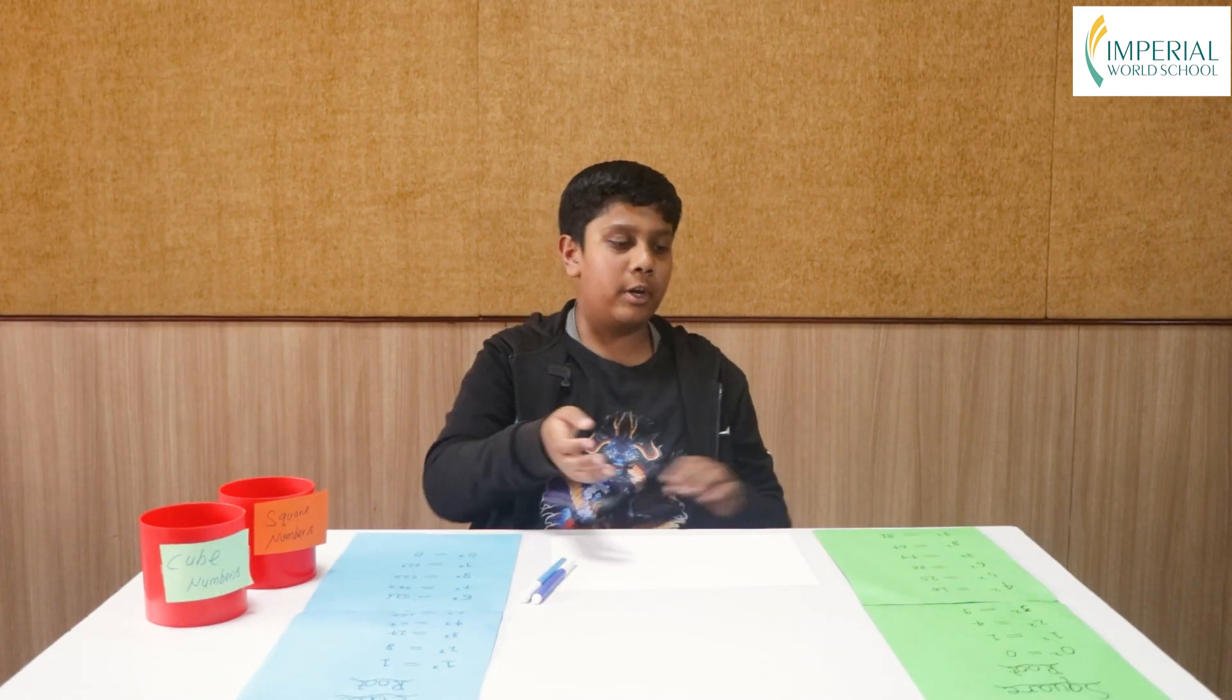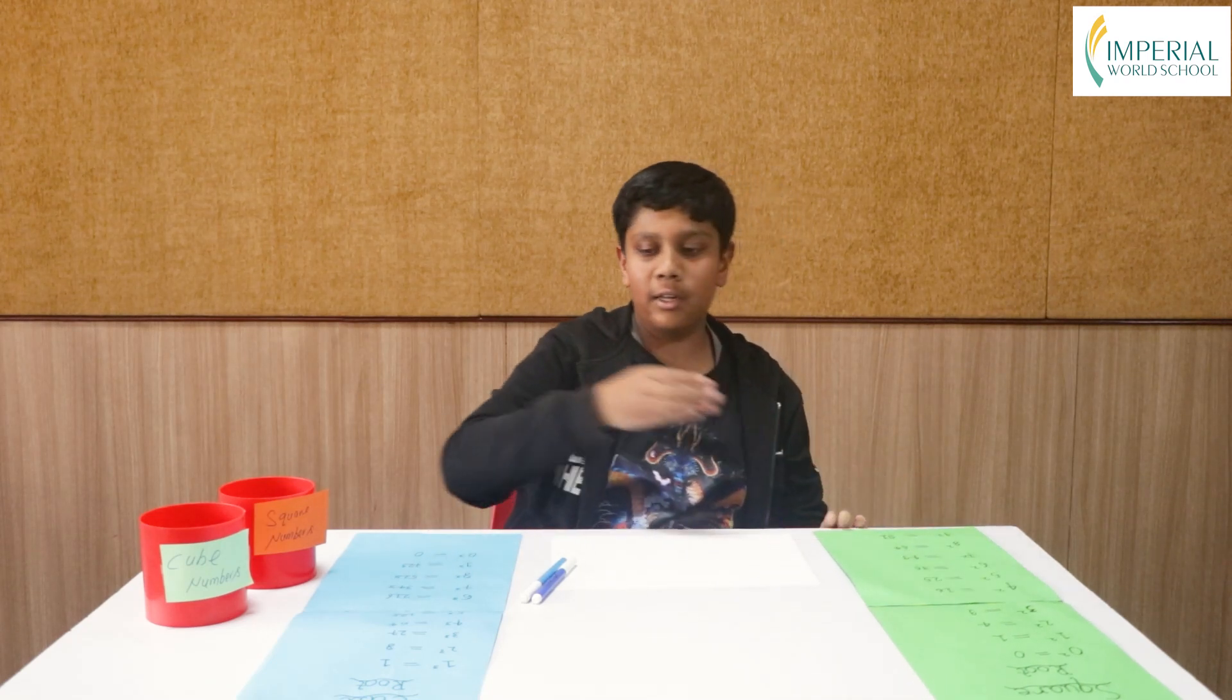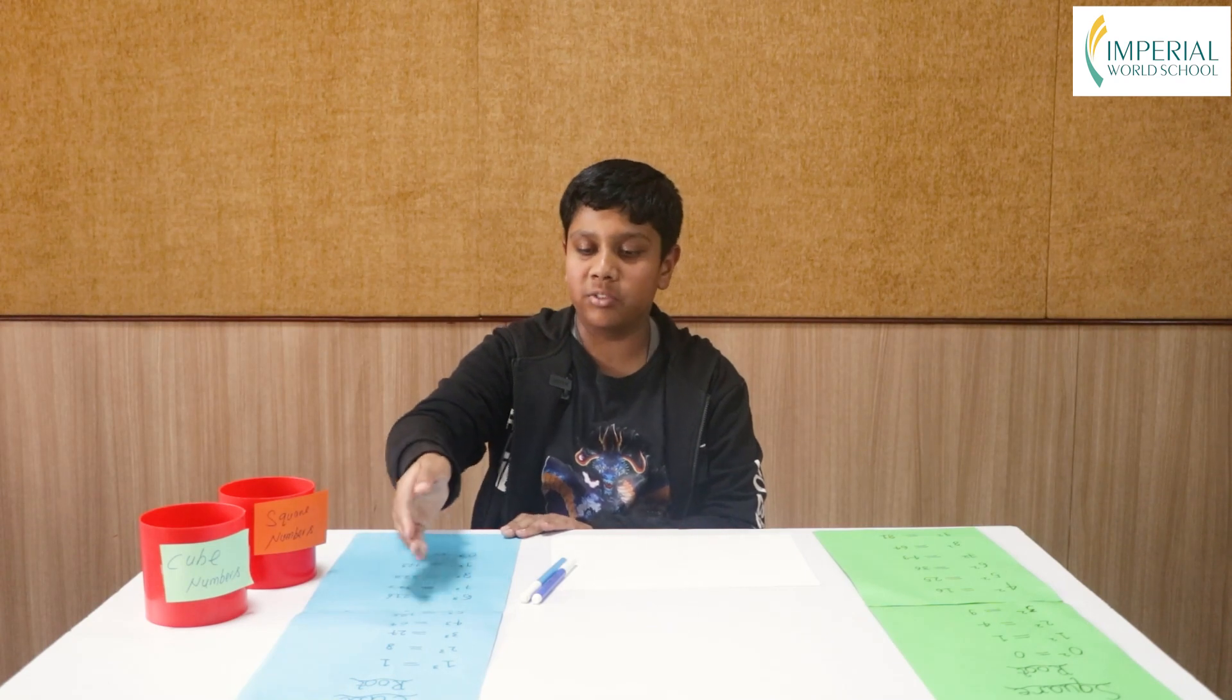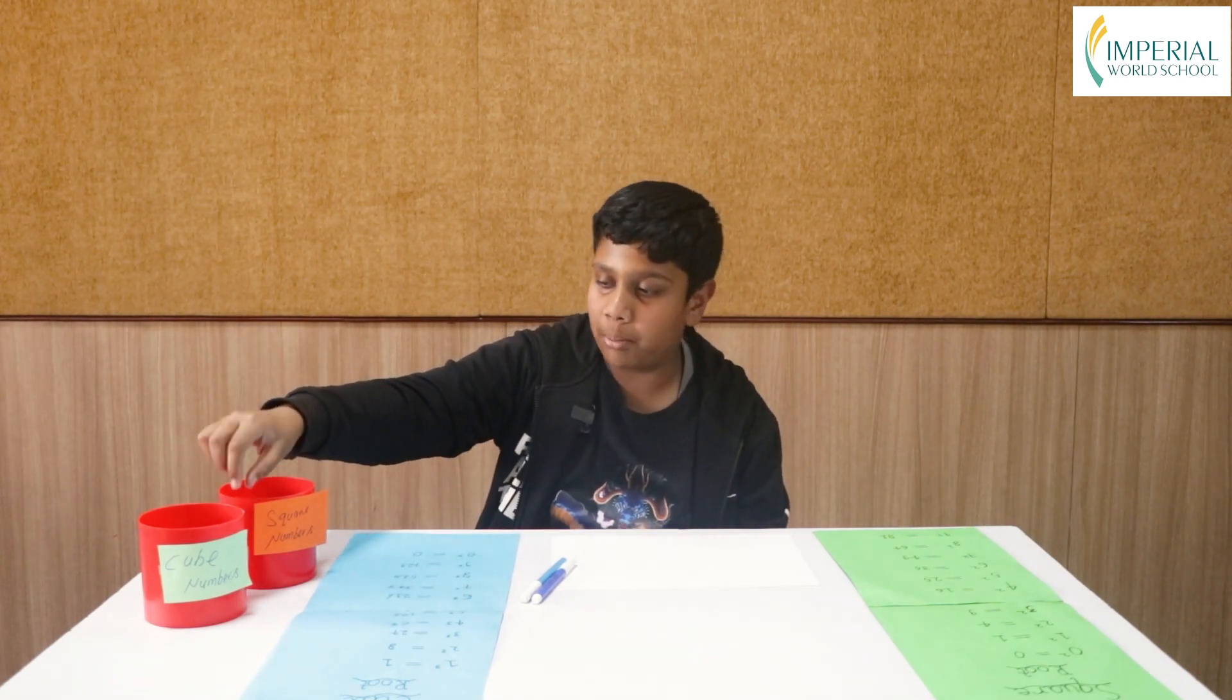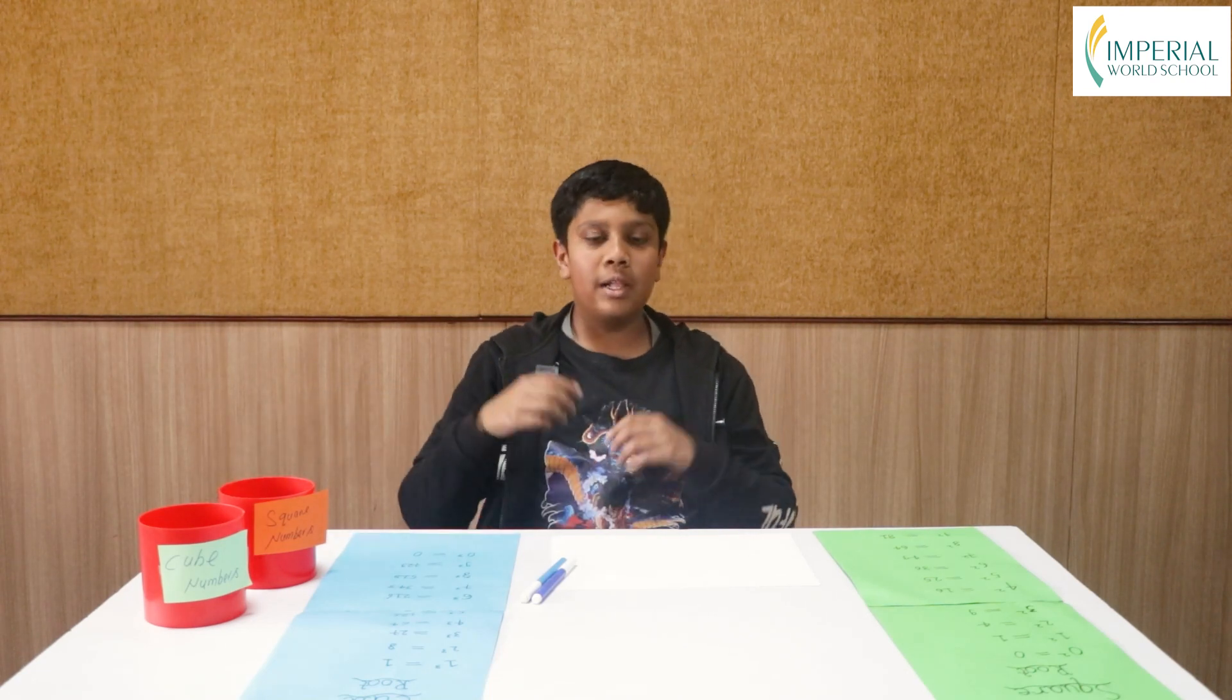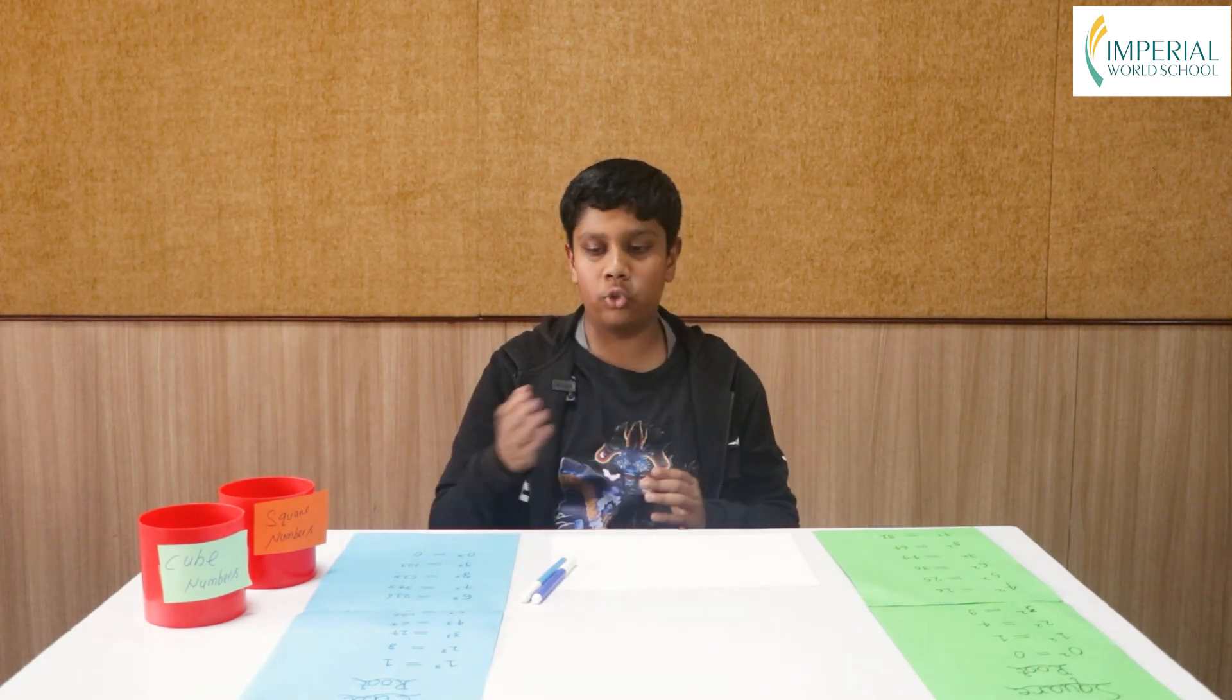So here today we are with the two charts. This is the square root and the square numbers from 0 to 9 and this is the cube root and cube numbers from 0 to 9 as well. We have these two balls. This ball has cube numbers and this ball has square numbers. Today we are going to use these both charts to find the square root and the cube root.